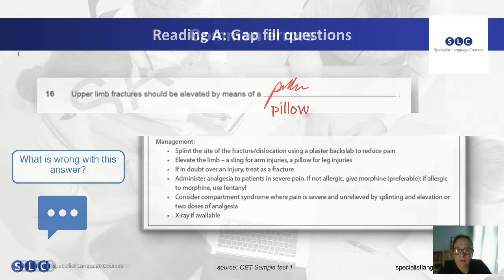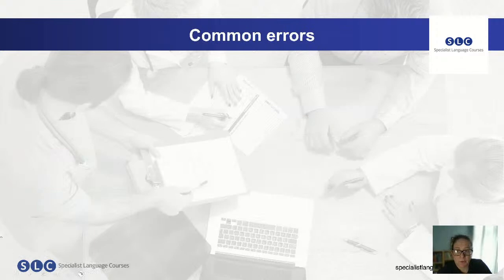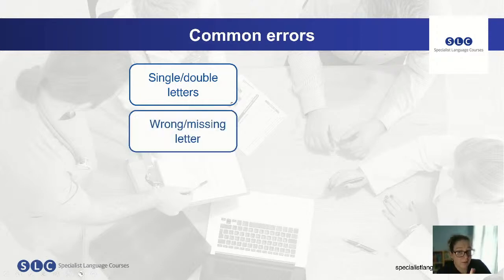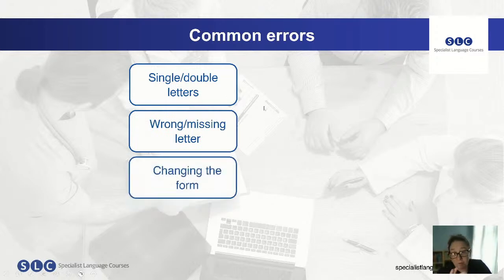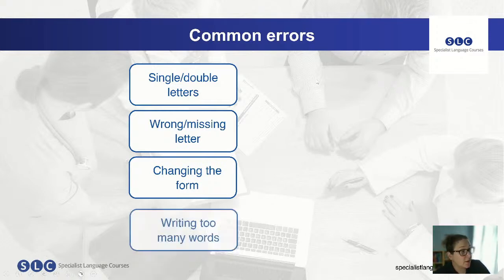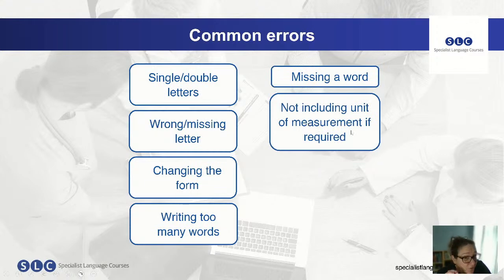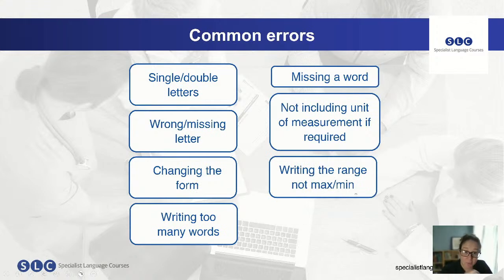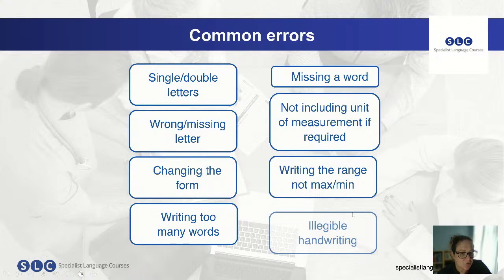To recap some common errors: single/double letters — be aware of those; wrong or missing letters; changing the form, for example singular and plural, or -ed to -ing; writing too many words; missing a word; not including a unit of measurement if required; writing the range instead of the maximum or minimum, or vice versa; and illegible handwriting. These are the most common errors candidates make in OET reading A.